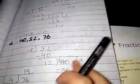Question D is 40, 52, 76. First of all we divide 40 on 52. 40 ones are 40. 2 minus 0 is 2, 5 minus 4 is 1. The next dividend is 40.